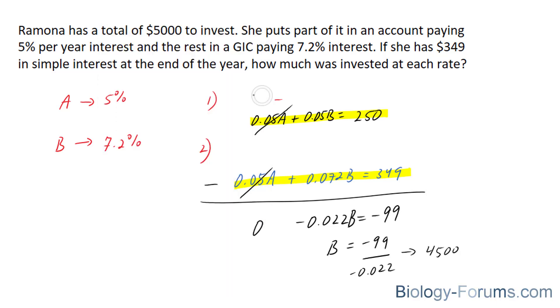Now, if you recall, that first formula that we created was A plus B is equal to 5,000. So to solve for A, we have to rearrange where we have 5,000 minus 4,500 is equal to 500.